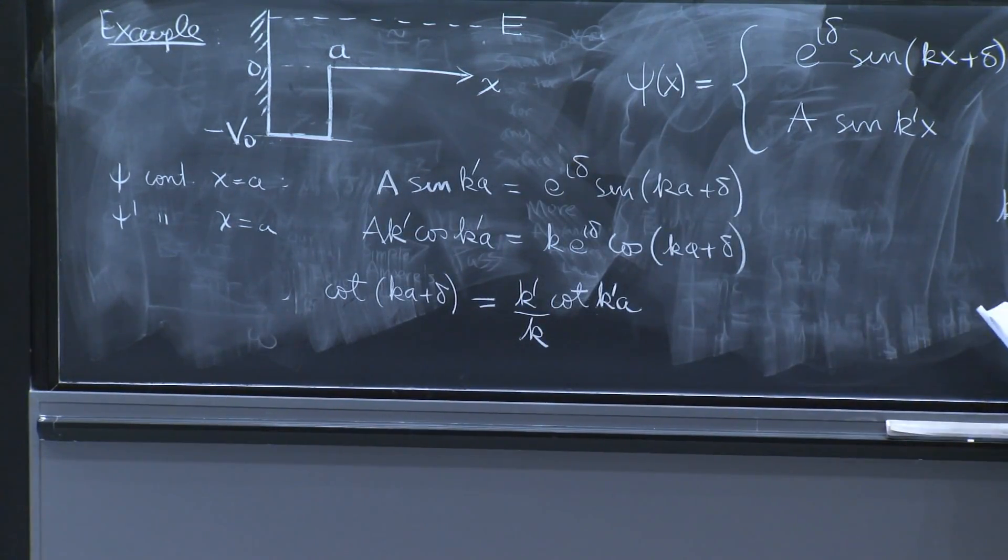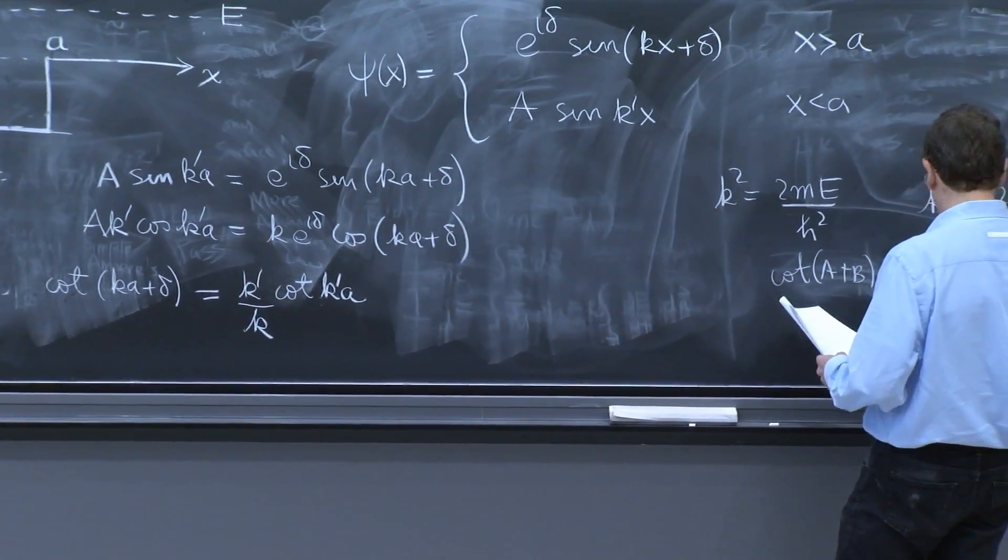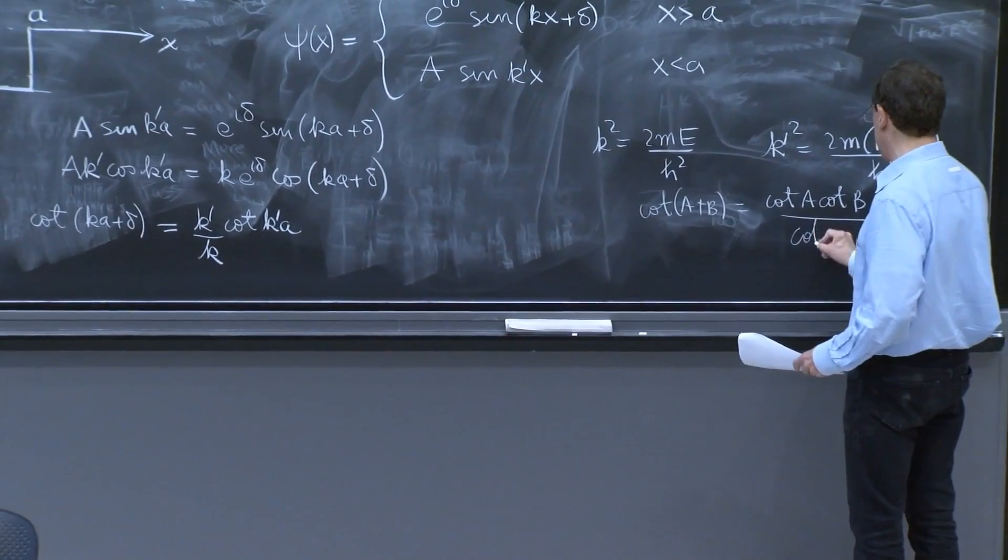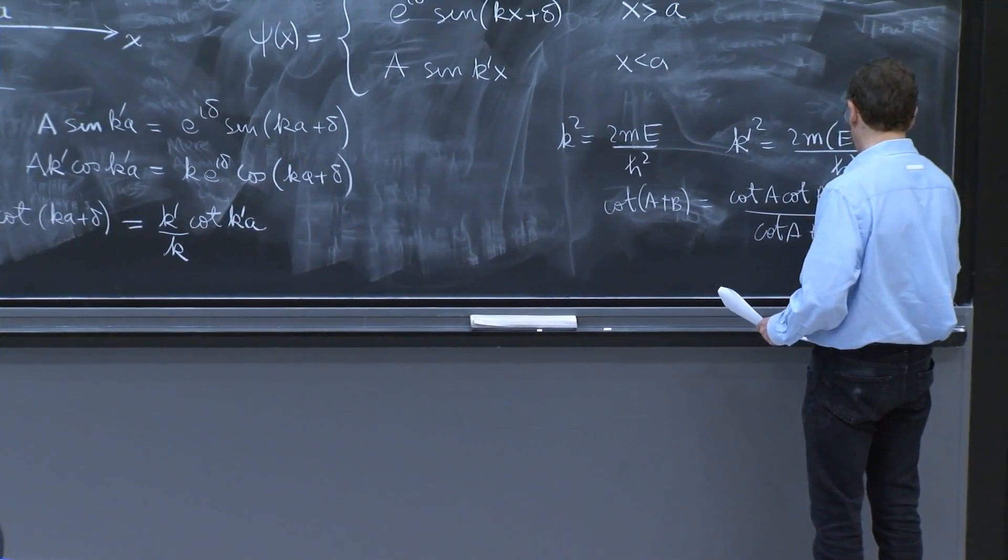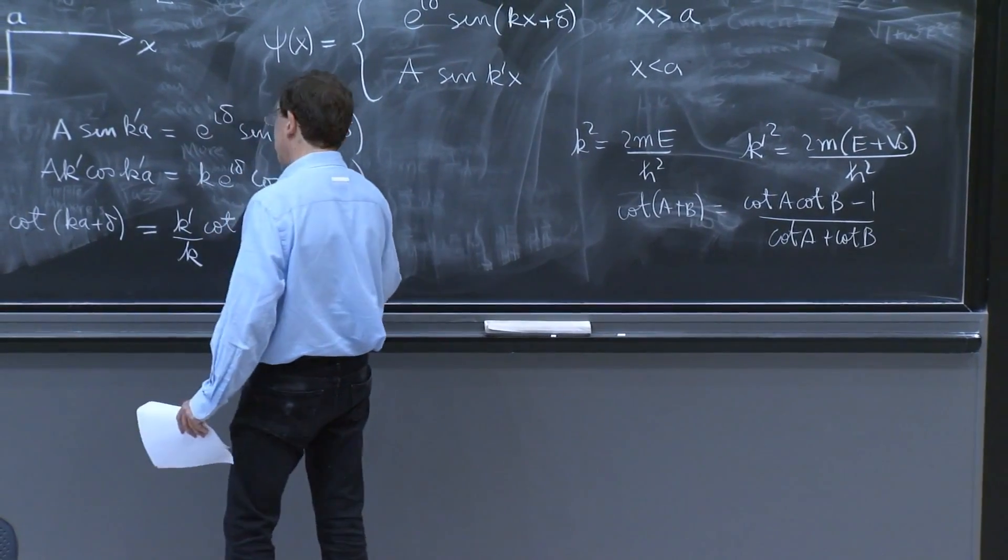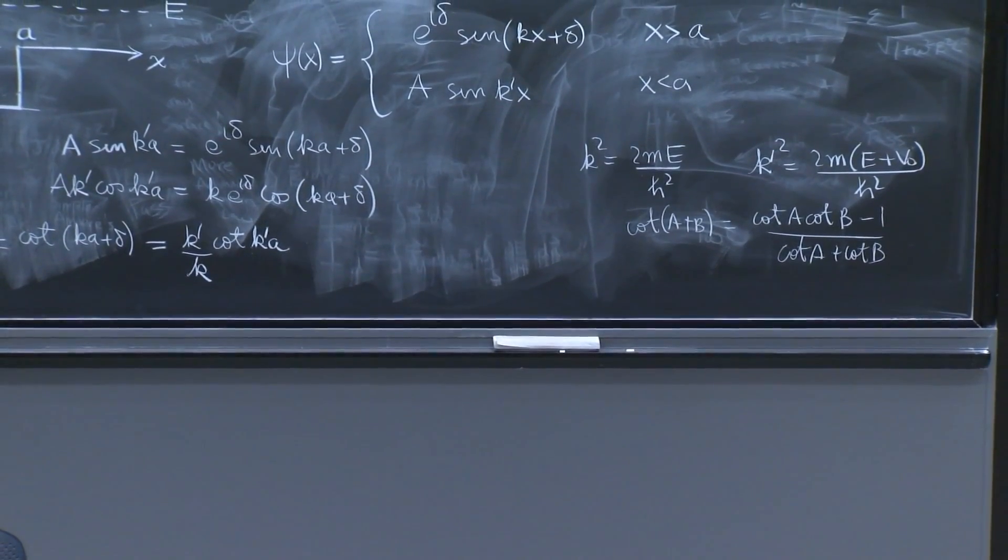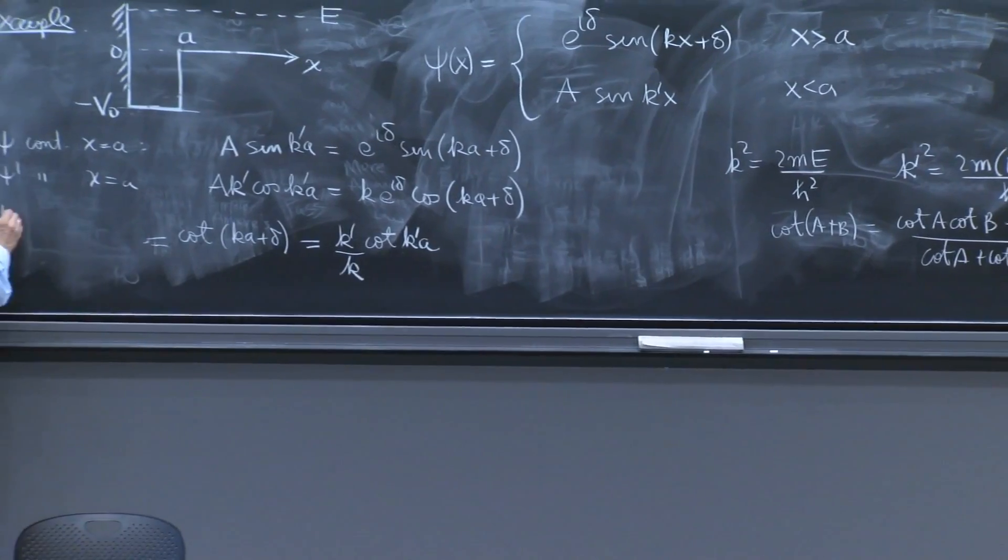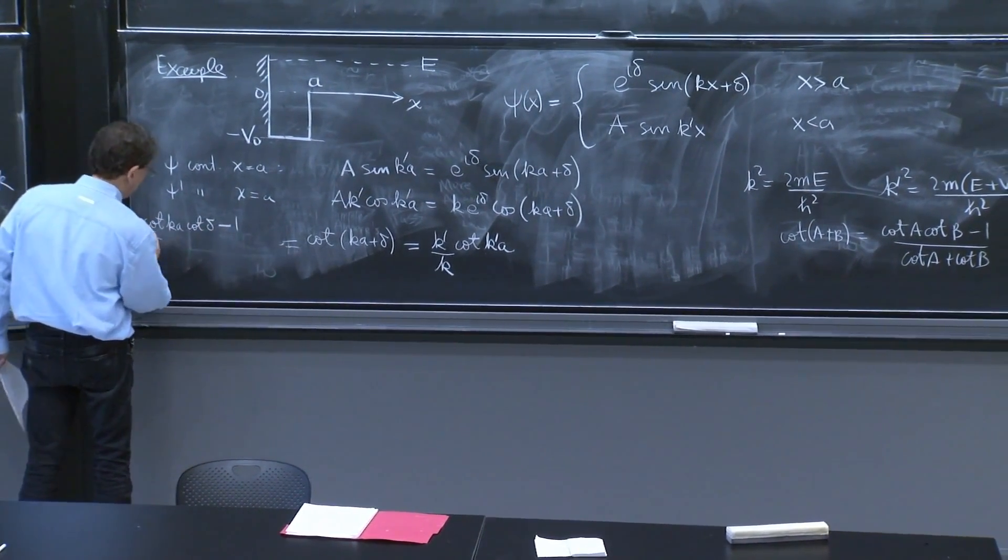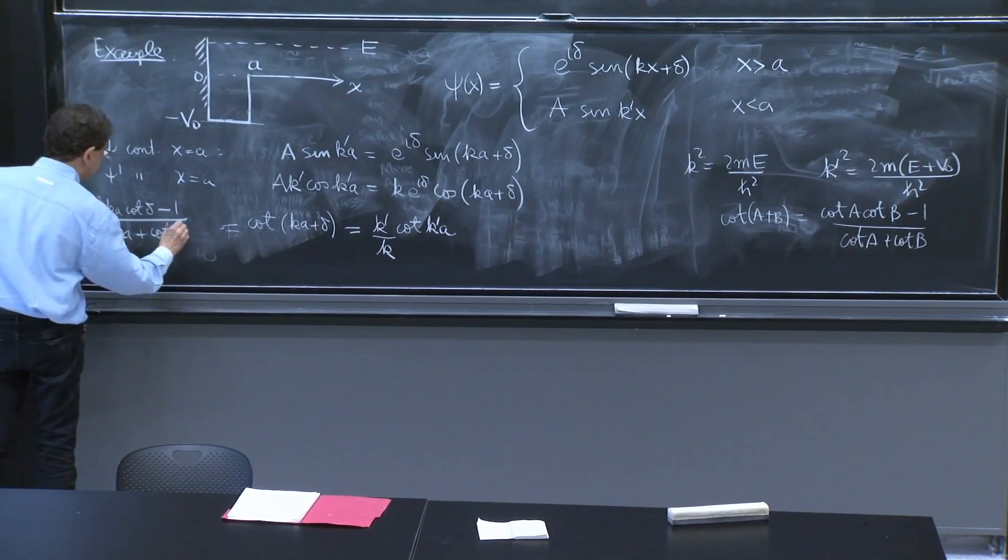is cot a cot b minus 1 over cot a plus cot b. So from here, you have that this expression is cot k a cot delta minus 1 over cot k a plus cot delta.